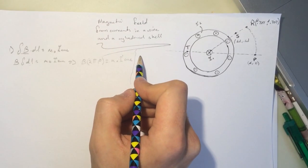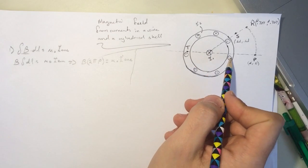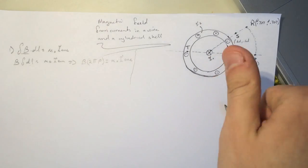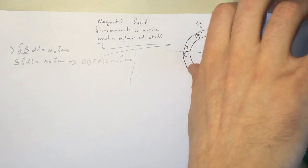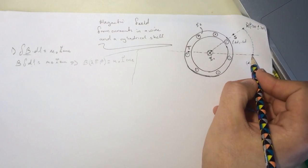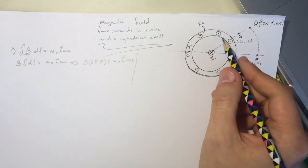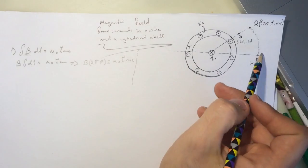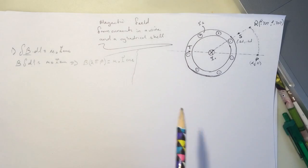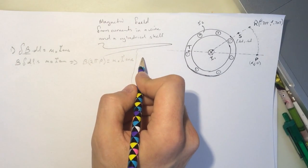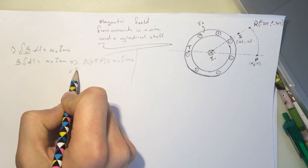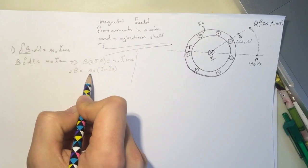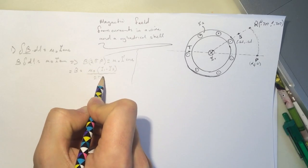So it's going to be I1 minus I2. So the I1, point my thumb with the current and curl it to the point P, which is going down. And from the other one, point your thumb out of the screen and then curl your fingers to the point P and you'll get up. So B will be equal to mu naught I1 minus I2 divided by 2 pi P.